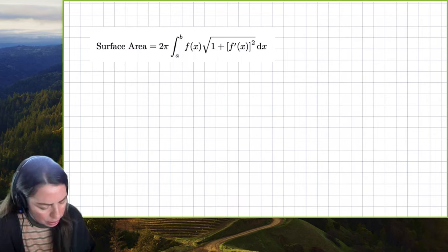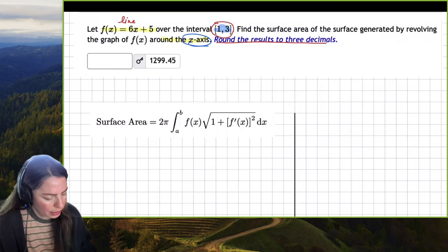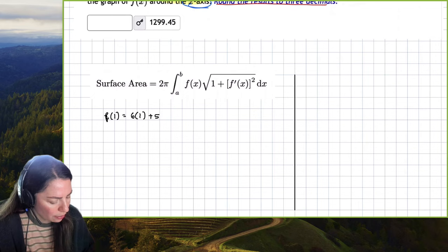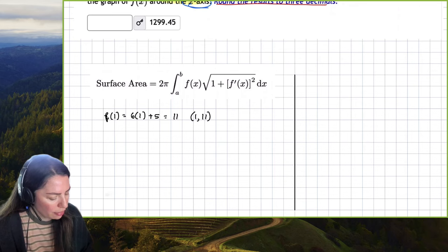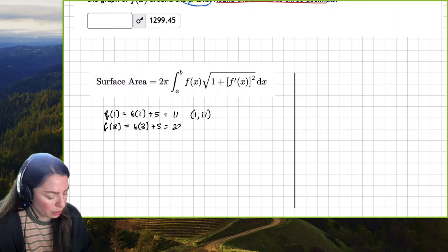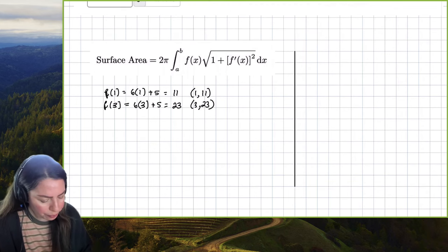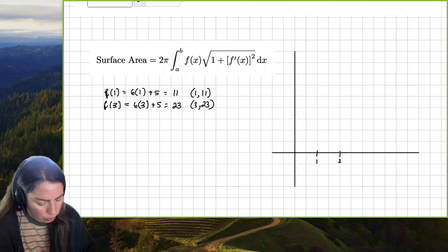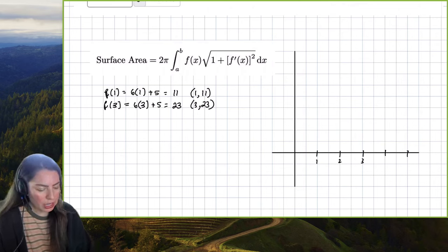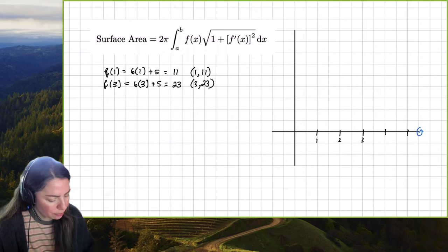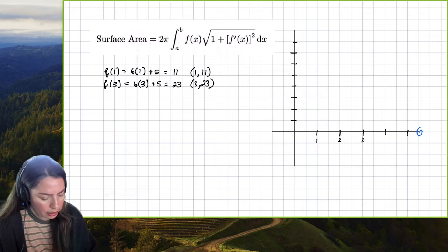I have graphing paper here and it looks like because the interval is 1 to 3 I'm gonna have just that first quadrant. So let me draw that first quadrant and I'm gonna draw it pretty tall since I can see that the ordered pair at 1, so f(1) is 6 times 1 plus 5 which is 11, so it'll start at (1,11), and then f(3) will be 6 times 3 plus 5 equals 18 plus 5 is 23, so it'll be (3,23). Let me go ahead and make this like 1 and then 2 and then 3, and then we'll go ahead and maybe do these in maybe 5s: 5, 10, 15, 20, and then 25.